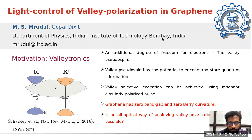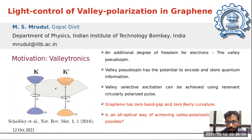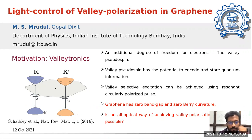Hi, I'm Rudul and this poster is about light control of valley polarization in graphene. The motivation for this work is that for hexagonal two-dimensional materials there is an additional degree of freedom, in addition to charge and spin, known as a valley pseudo-spin.